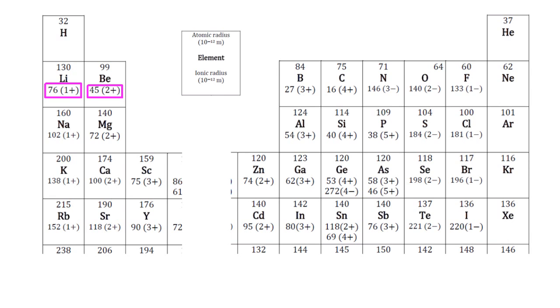And the same pattern follows over on the metal side. The lithium and beryllium ions both have two electrons, but beryllium's smaller, because it has more protons attracting in those two electrons. And we are done.